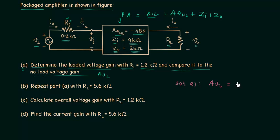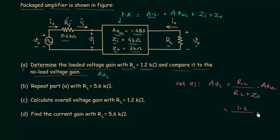AVL is equal to RL divided by (RL plus ZO), multiplied by the no-load voltage gain AVNL. Substituting the values: RL is equal to 1.2kΩ, RL plus ZO equals 1.2kΩ plus 2kΩ, multiplied by AVNL which is minus 480. When you solve this, the loaded voltage gain AVL equals minus 180.